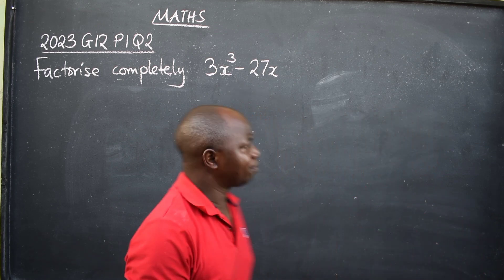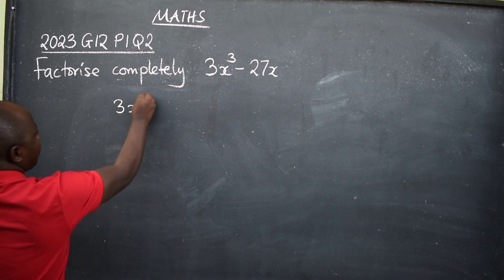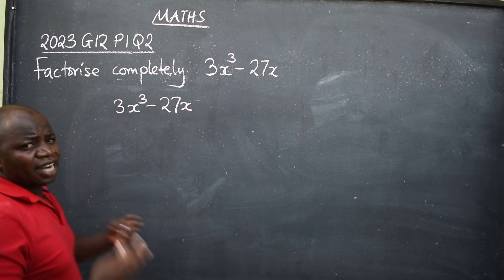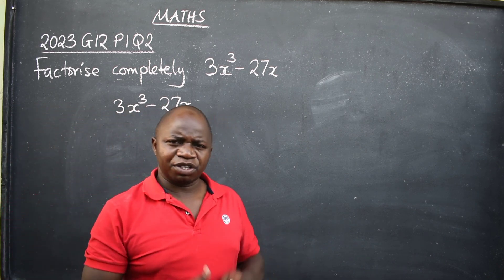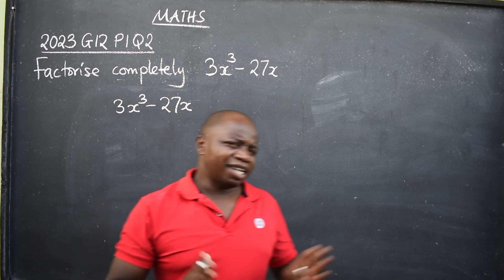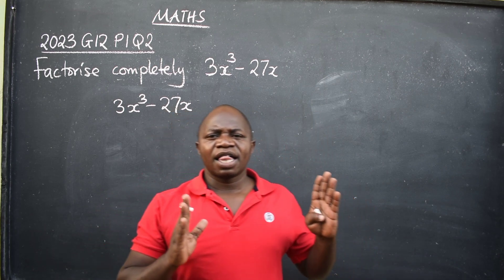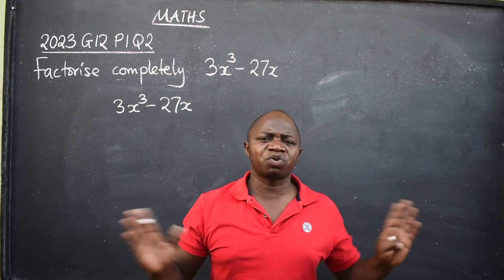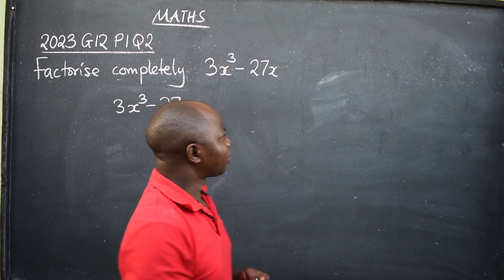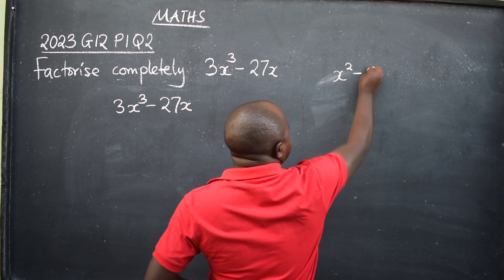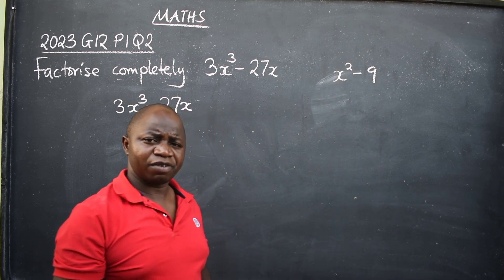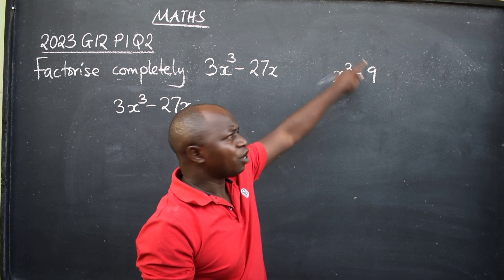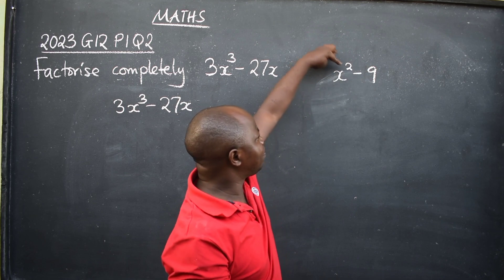You copy the question: 3x to the power 3 minus 27x. We know that we are dealing with the difference of two squares. The principle is that the terms must be in square forms. All the terms must be in square forms. Let's say we have x squared minus 9. x is already in square form.